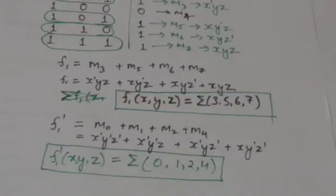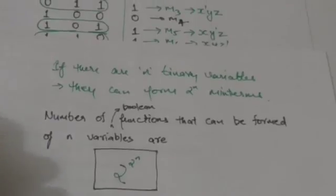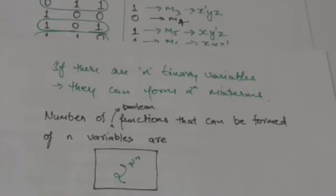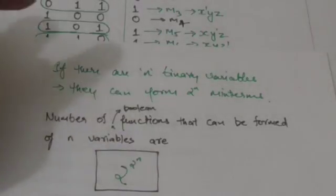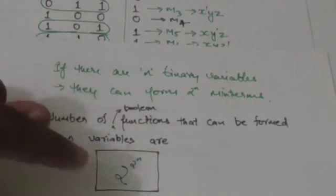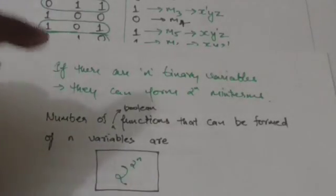If we have n variables, we can form 2^n different minterms. Since a function is represented as a sum of minterms, each minterm can either exist in the function or not — giving two options per minterm. Therefore, the total number of different boolean functions that can be formed with n variables is 2 raised to the power of 2^n.